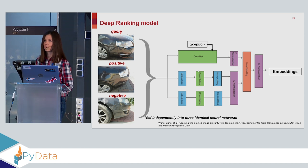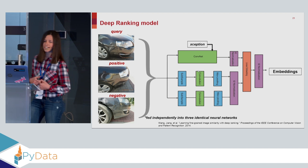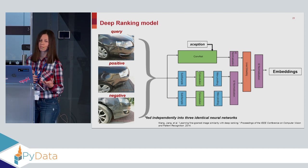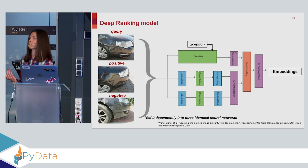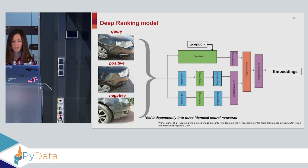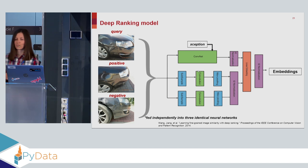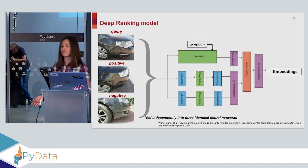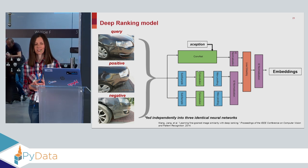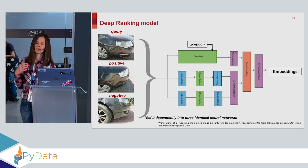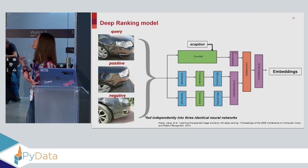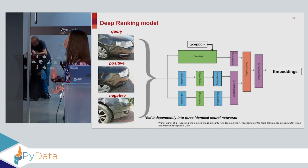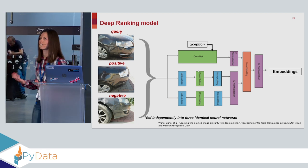Once we had the triplets, the task was to put them through a model that can better differentiate between what is the positive and what is the negative for a given query. The model is published in the paper called 'Learning Fine-Grained Image Similarity with Deep Ranking,' published mostly by researchers from Google. We decided to implement it. We replaced the base model in the upper part — replacing AlexNet with Xception — because we liked it and followed the visual inspection from the previous examples.